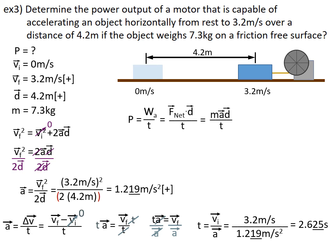Now, I can go back to that initial equation I was working on. I will substitute in a mass of 7.3 kilograms, acceleration that I found of 1.219 meters per second squared, the displacement of 4.2 meters, and the time that I found, 2.625 seconds. I punch that into my calculator.